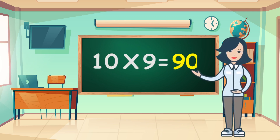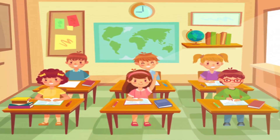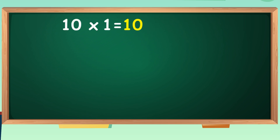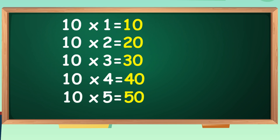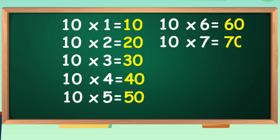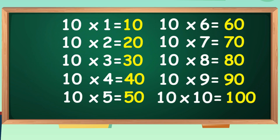Ten nines are ninety. Ten nines are ninety. Ten tens are a hundred. Ten tens are a hundred. Ten ones are ten. Ten ones are ten. Ten twos are twenty. Ten twos are twenty. Ten threes are thirty. Ten threes are thirty. Ten fours are forty. Ten fours are forty. Ten fives are fifty. Ten fives are fifty. Ten sixes are sixty. Ten sixes are sixty. Ten sevens are seventy. Ten sevens are seventy. Ten eights are eighty. Ten eights are eighty. Ten nines are ninety. Ten nines are ninety. Ten tens are a hundred. Ten tens are a hundred.